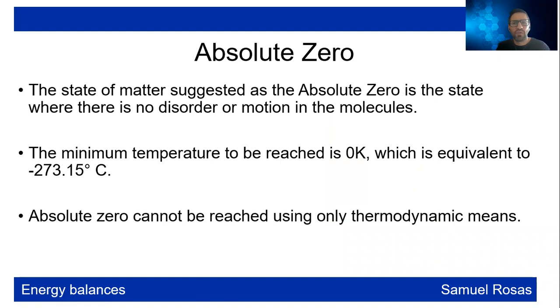Absolute zero, which is not the same, is the state of matter where there is no disorder or motions in the molecules. The minimum temperature to be reached is zero Kelvin or zero Rankine, which is equivalent to minus 273.15 degrees Celsius. Absolute zero cannot be reached using only thermodynamic means. You need other means like quantum mechanics.